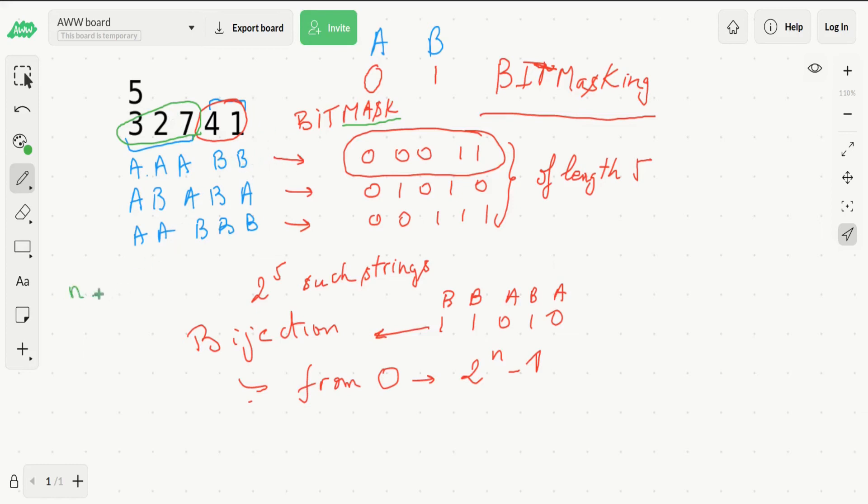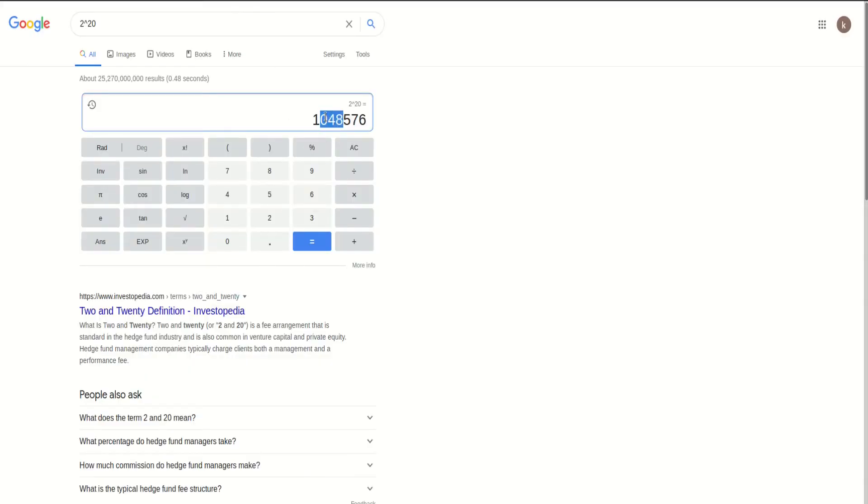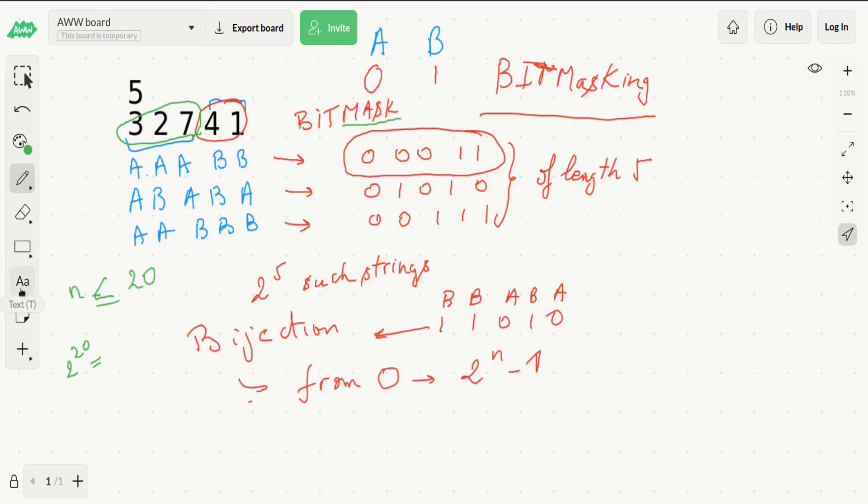Since n is less than or equal to 20, then all the strings that will be generated are up to 2 to the 20, which is equal to 1 million and some. This is good because it is within our time limit.